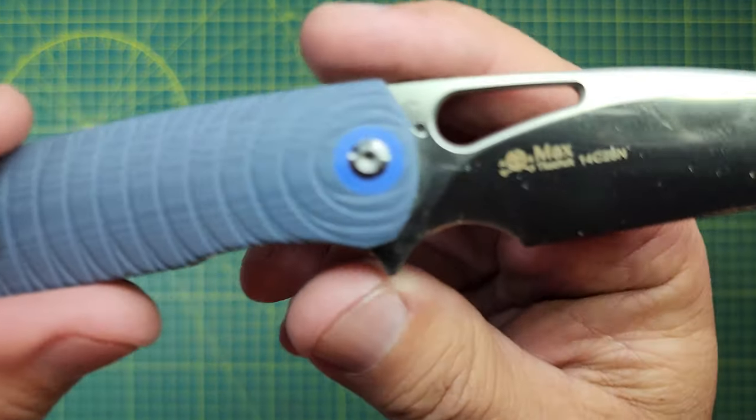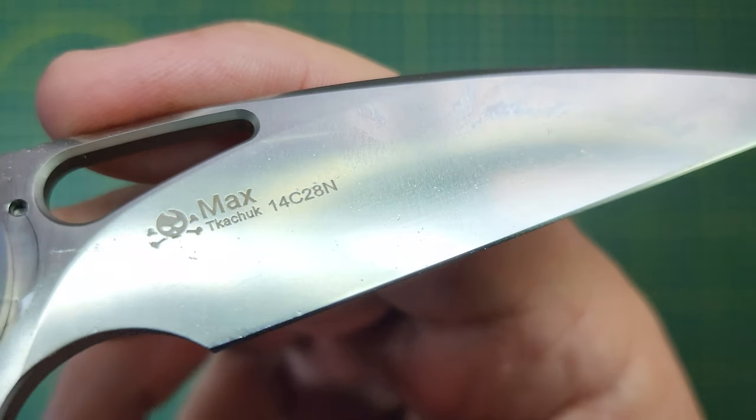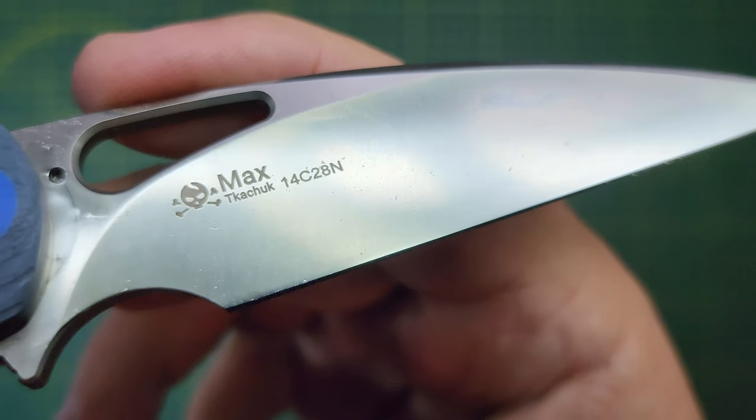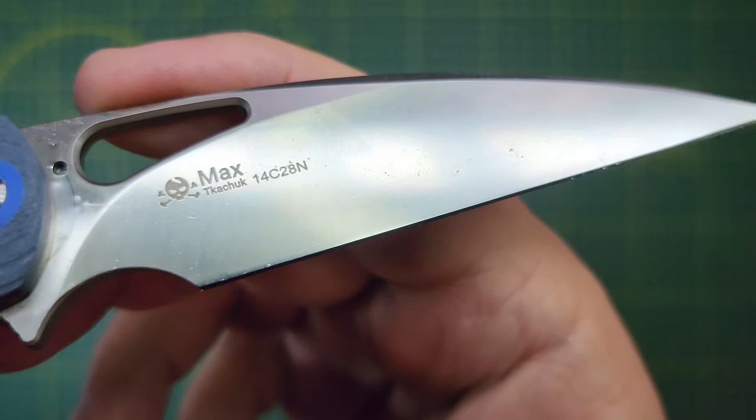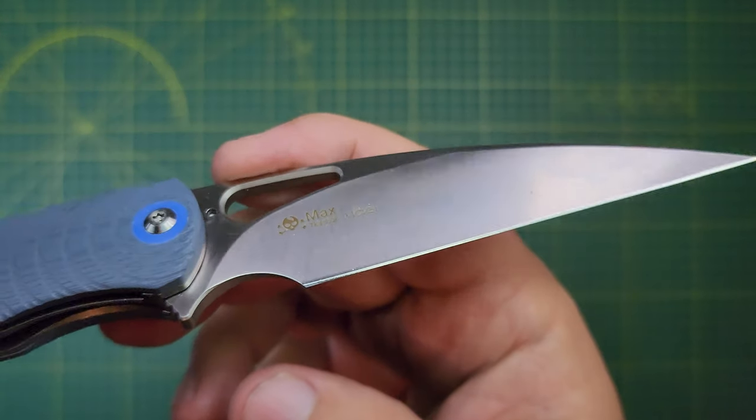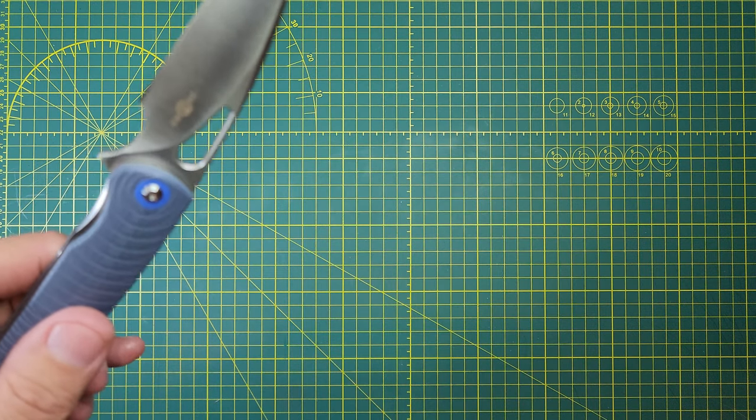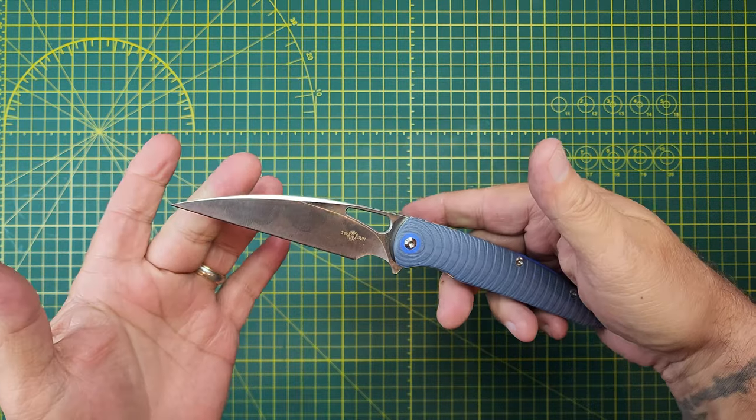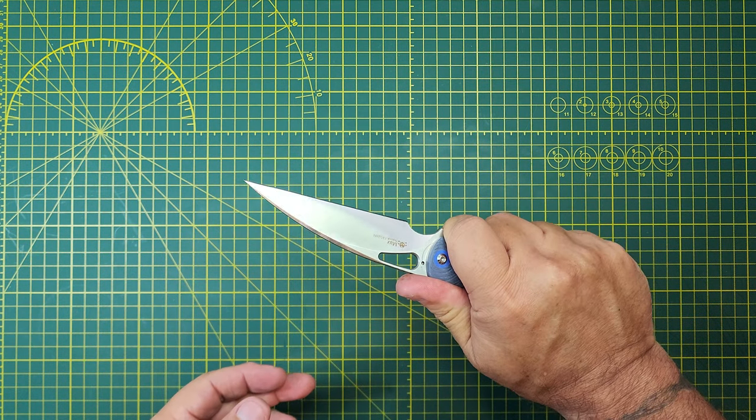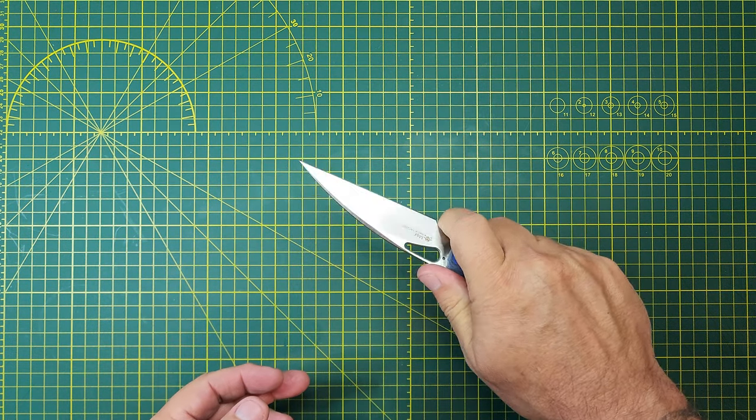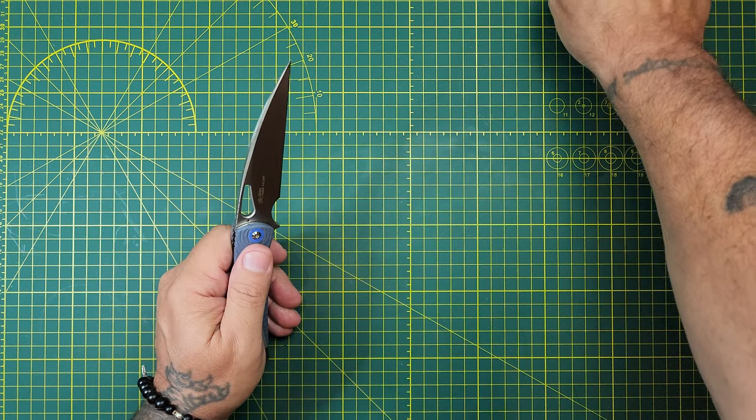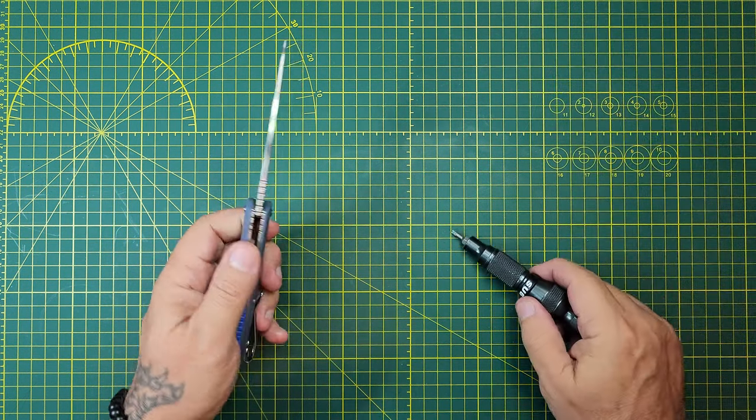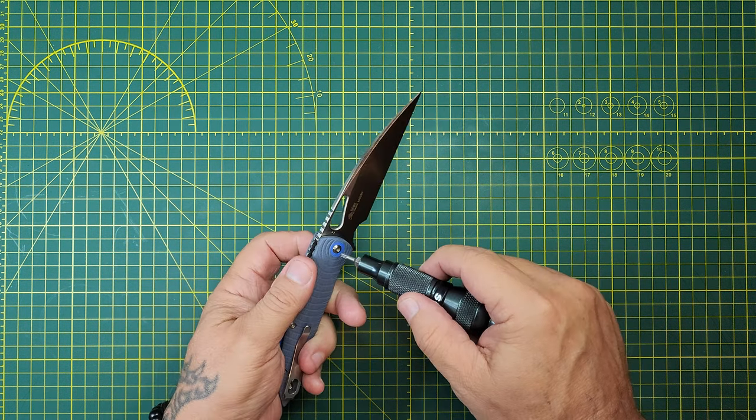So let's look here real quick. It's a Max Tuchuk design and 14C28N steel. And that's a TS-116. I'm interested. Let's get in here.